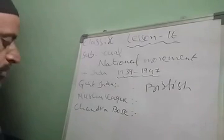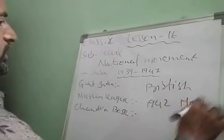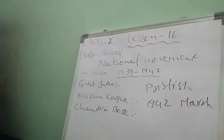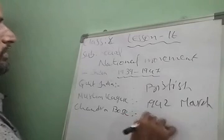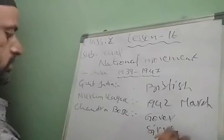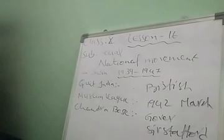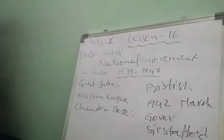In March 1942, the Prime Minister dispatched Sir Stafford Cripps, a member of the War Cabinet, to India to discuss the British government's declaration. The draft was based on the Act of 1935. The draft was unacceptable to the Congress Working Committee, who rejected it. The failure of the Cripps' Mission further strained relations between the Congress and the British government.